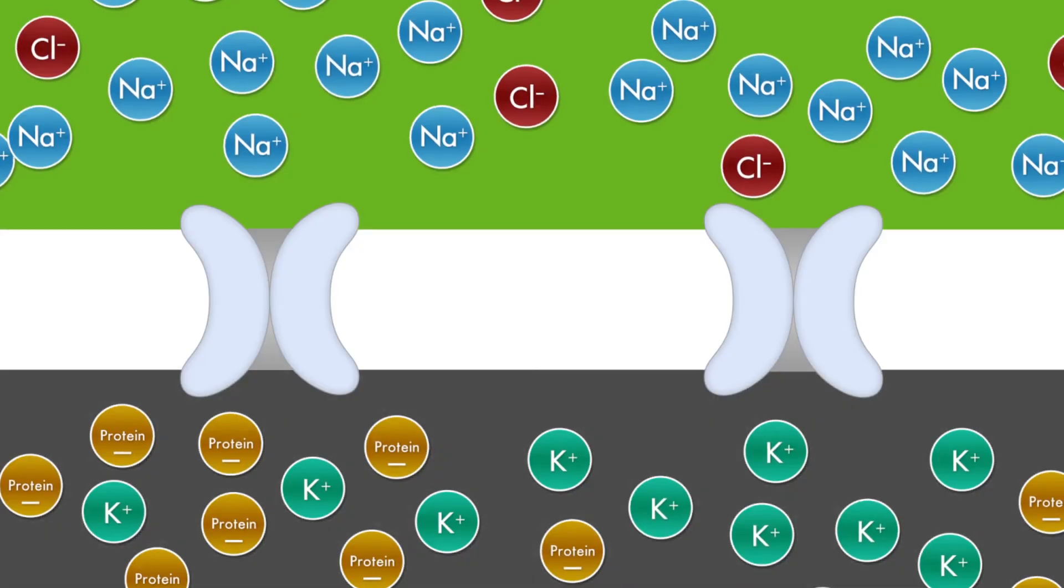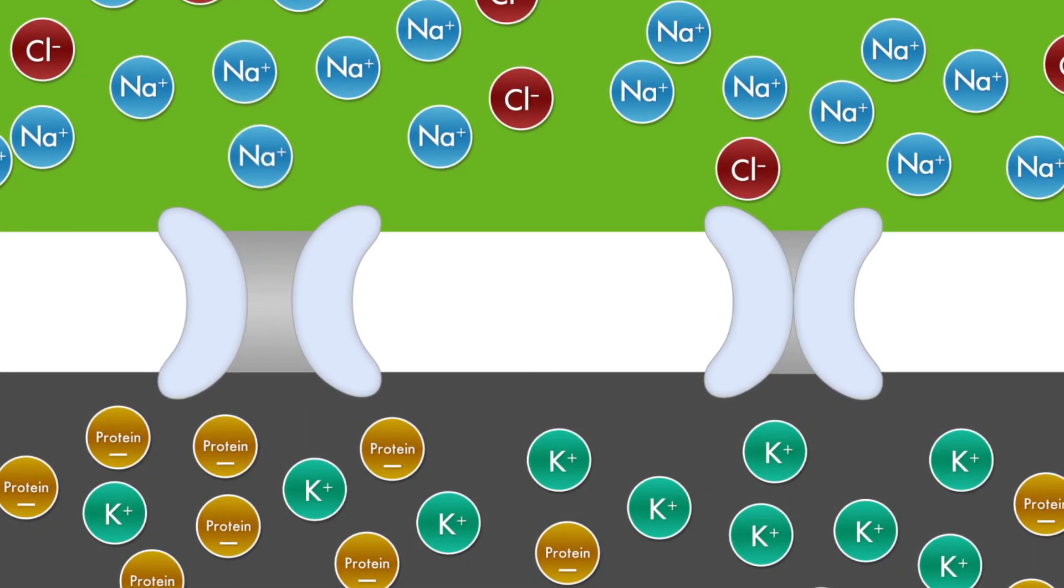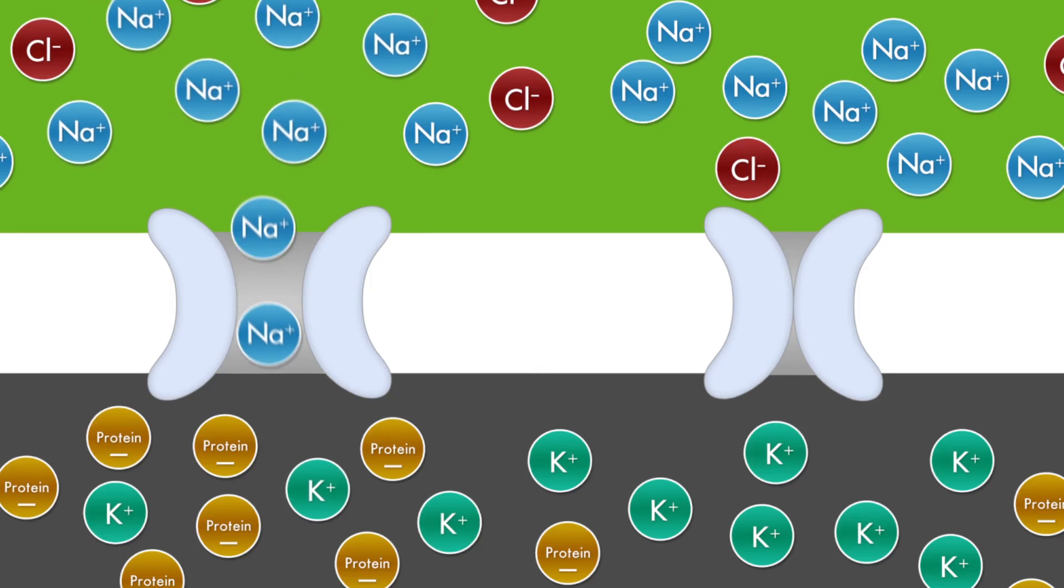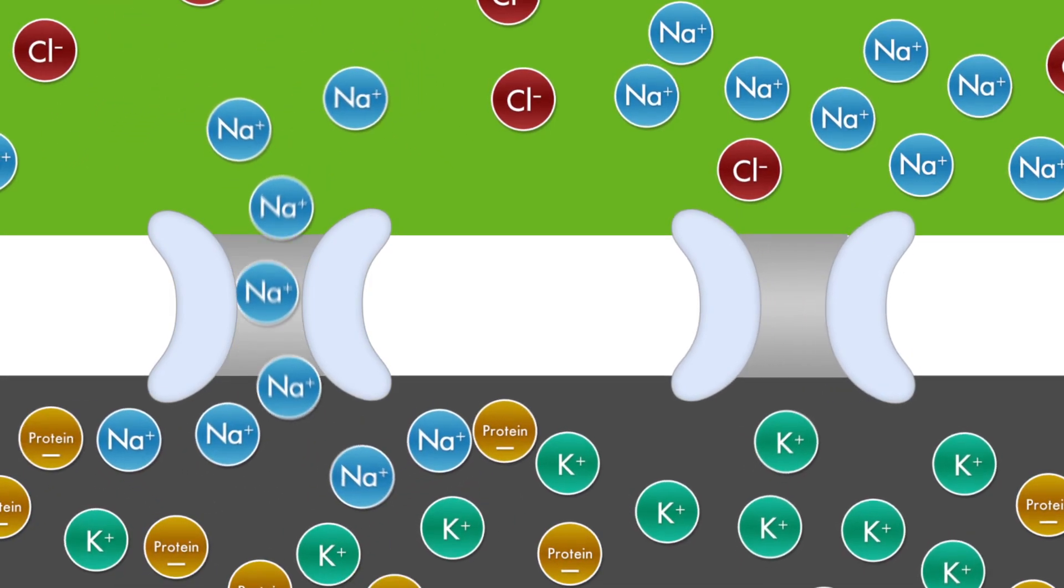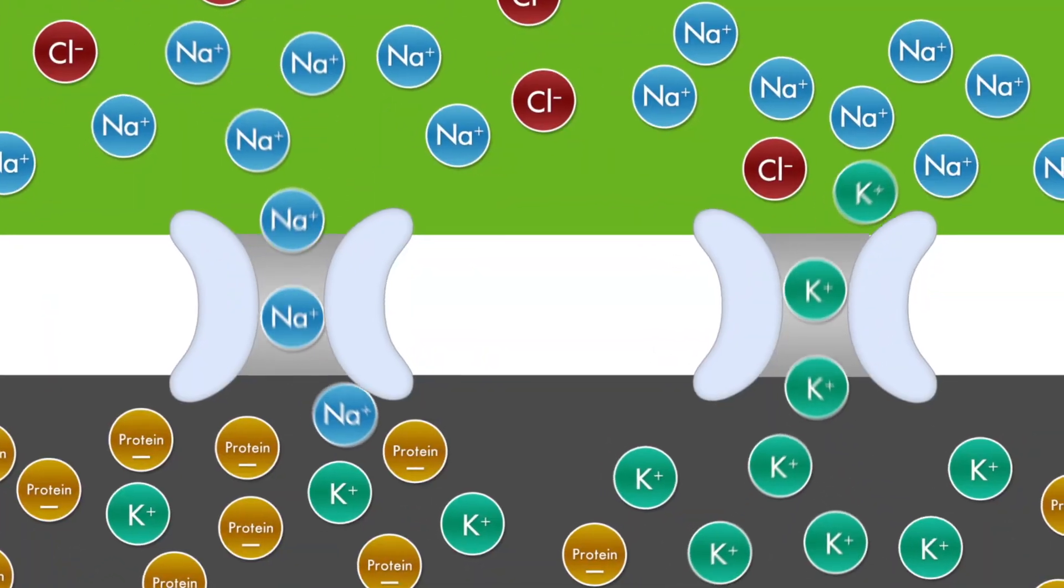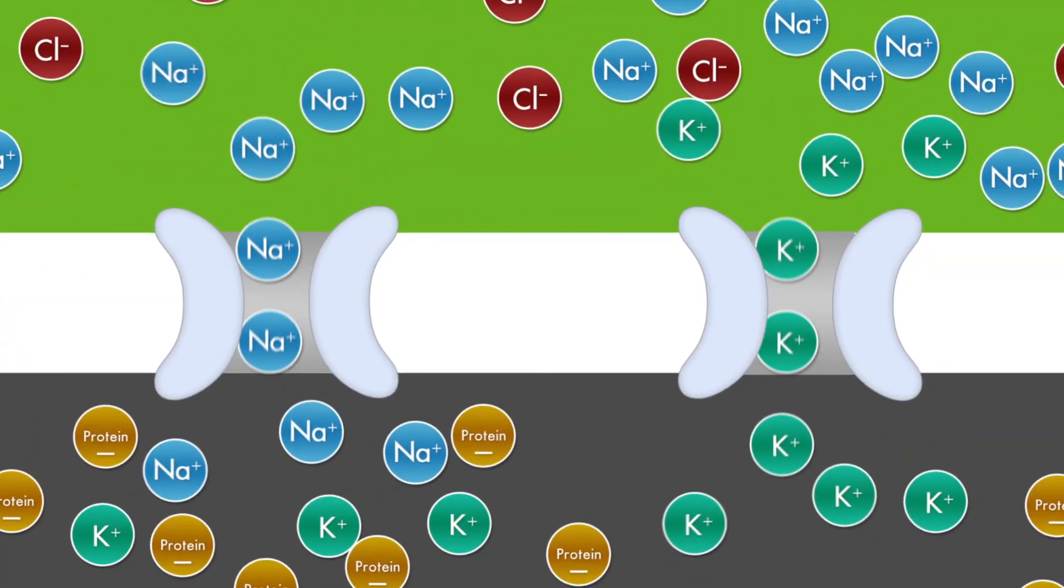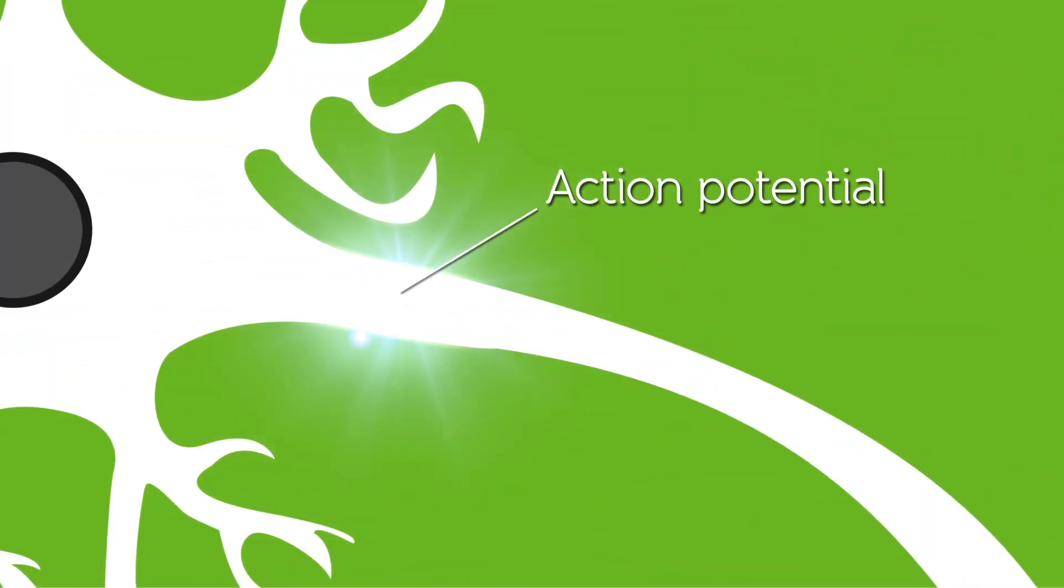The action potential is essentially a brief increase in the permeability of the membrane to sodium, immediately followed by a brief increase in the permeability of the membrane to potassium. Once an action potential is generated, it propagates all the way down the axon to the terminal buttons. In this sense, action potentials fire in an all-or-nothing fashion. Once triggered, it will continue all the way down the length of the axon to the terminal buttons.